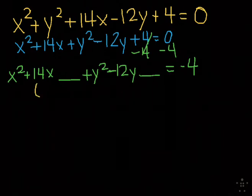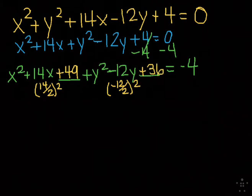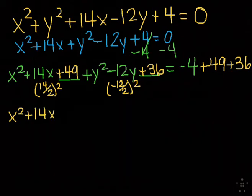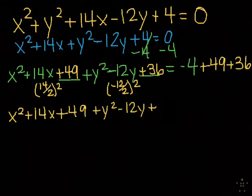Remember you take half the middle number and square it. So 14 divided by 2 is 7, squared is 49, and I'm adding that in. Then I take negative 12, same thing. Negative 12 divided by 2 is negative 6, squared is positive 36. And remember, we have to keep our equation balanced. If I added in 49 and 36, I have to add it in on both sides to keep the equation balanced.